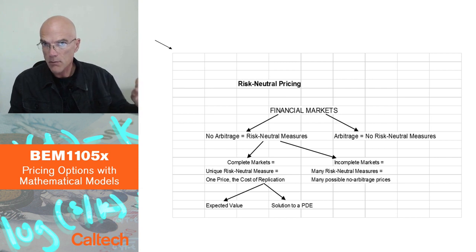In complete markets, you can replicate everything, and therefore you know the cost of replication for everything, therefore you know the price for everything.